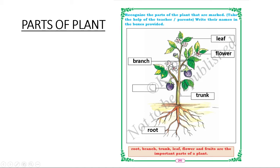This straight one is a trunk. Trunk will have branches like here, one, two, three, four branches. Then each plant will give you a fruit. Clear with the parts of plant? Root, trunk, flower, leaf, branch, fruit.